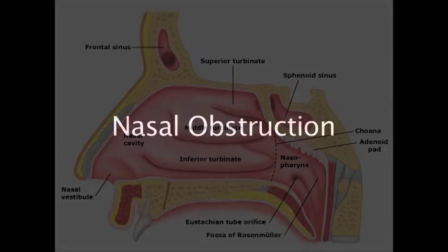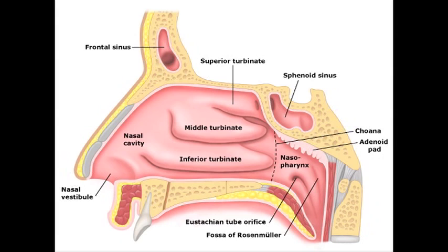When inquiring about nasal obstruction, ask about congestion and stuffiness, facial tenderness and pain, noisy breathing or snoring, and pruritus of the nose or eyes which could suggest an allergic etiology. When asking about rhinorrhea, get the patient to describe the duration of symptoms, what makes their runny nose better or worse, whether or not the patient suffers from allergies, and the character and color of the nasal discharge.